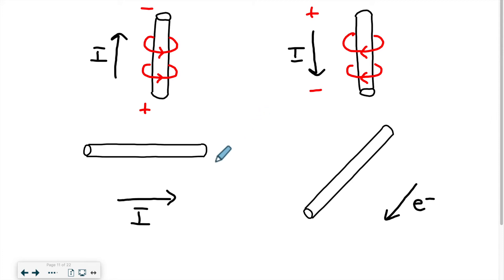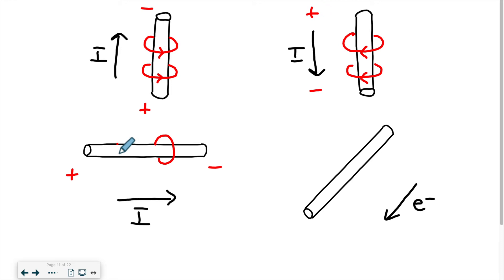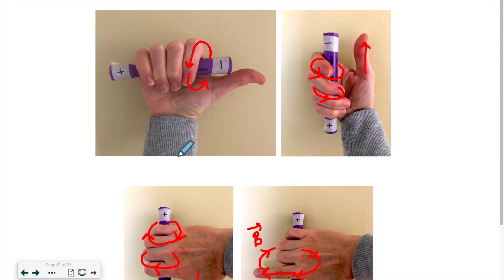Next we have this one here. My current goes from positive to negative following this direction. My fingers — my fingernails or fingertips — are going upwards or downwards. If you said downwards, that is correct. So they're going downwards. It would look like this image over here — my fingers are going downwards.